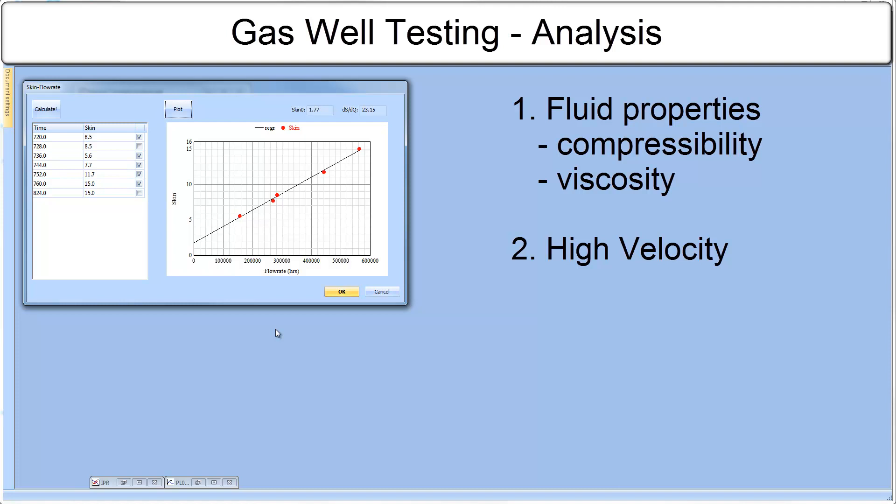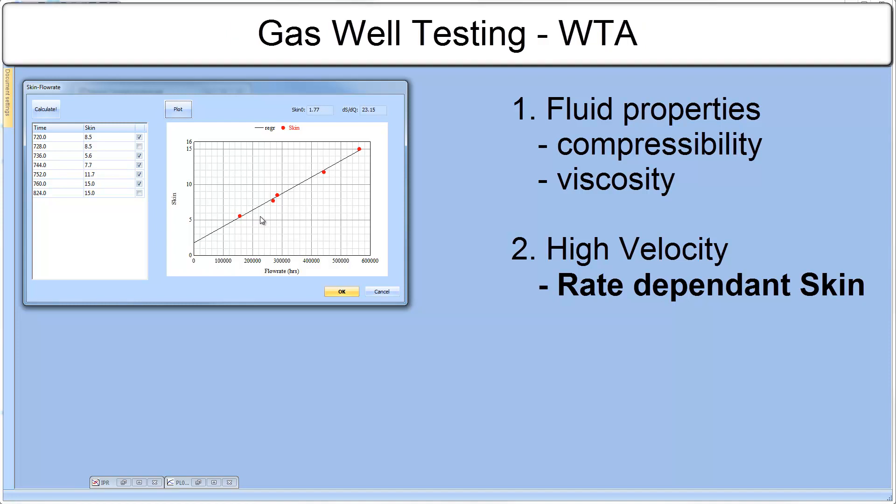Second, another difficulty of gas well test interpretation is the high velocity reached by the flow around the well bore creating turbulence. The turbulence then generates additional skin effect greatly dependent on flow rate. Parameter D or Ds over Dq is also called non-Darcy flow coefficient.